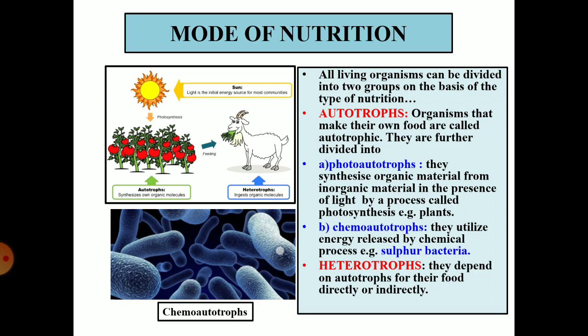Autotrophs are living organisms that make their own food. They can further be divided into photoautotrophs, which synthesize organic material from inorganic material in the presence of light by a process called photosynthesis. All green plants come under this category.